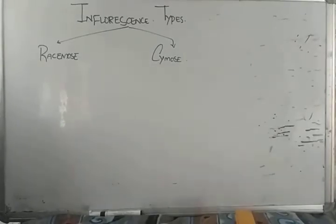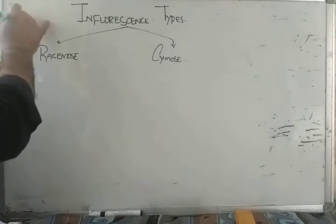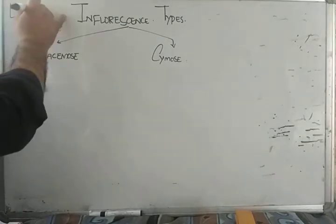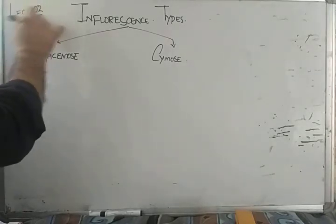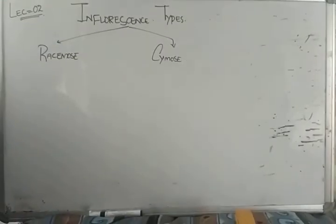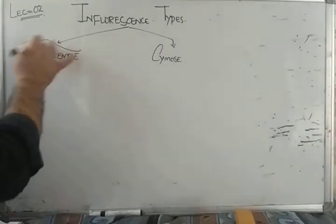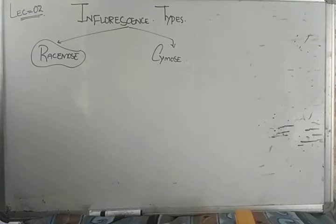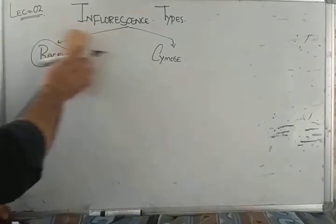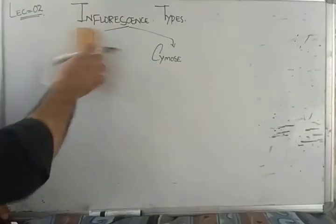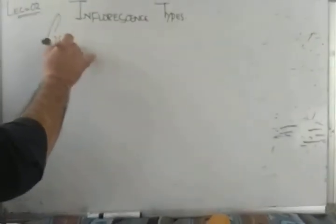Assalamualaikum dear students. This is lecture number two on inflorescence. As you already know, in the first lecture of inflorescence I discussed racemose inflorescence, which is also called indeterminate inflorescence, and all the types of racemose inflorescence. Today in this lecture we will talk about the second type of inflorescence.